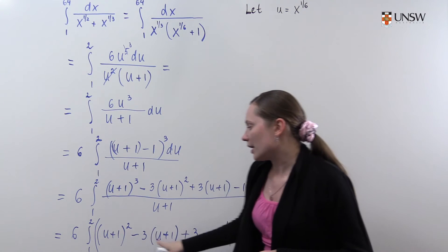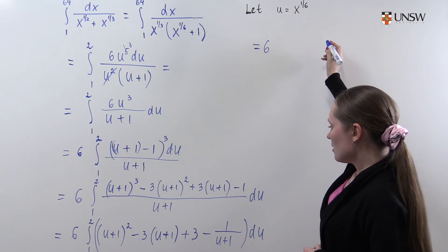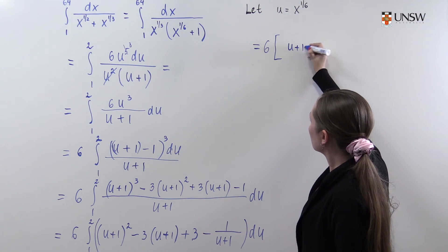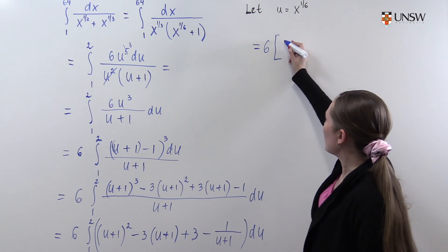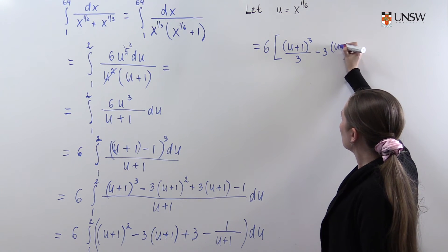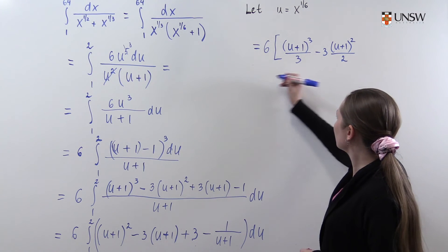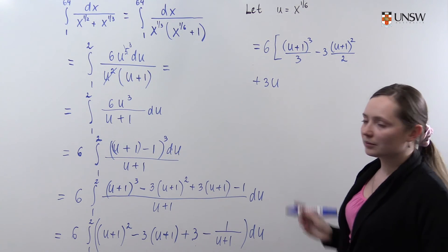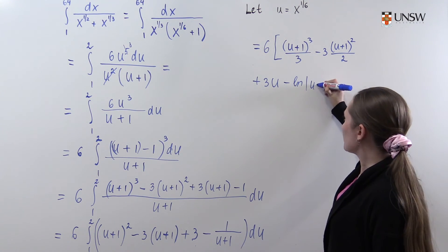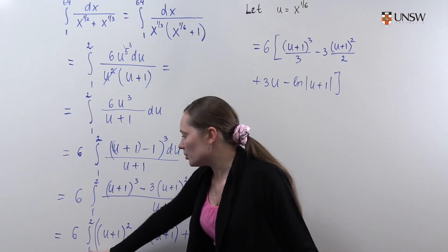Integrating term by term, we get 6 times: (u plus 1) cubed over 3, minus 3 times (u plus 1) squared over 2, plus 3u, minus the logarithm of (u plus 1), evaluated from u equals 1 to u equals 2.